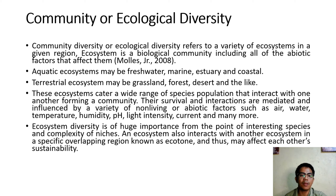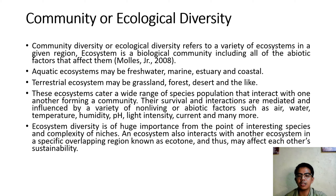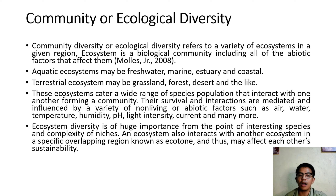These ecosystems cater to a wide range of species that interact with one another, forming a community. Their survival and interaction are influenced by abiotic factors such as air, water, temperature, humidity, pH, light intensity, and current. Ecosystem diversity is of huge importance from the perspective of species interaction and complexity of niches. An ecosystem also interacts with another ecosystem in a specific overlapping region known as an ecotone, which may affect each other's sustainability.